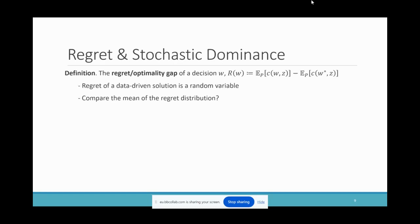To evaluate the performance of a solution, we use the following criteria. The regret or optimality gap of a decision W is the difference between the ground truth expected cost of W and W-star. The lower the regret, the better the decision. Because data-driven solutions depend on the data, their regrets are also random. We need a way to compare two regret distributions — one way is to compare only the mean, which is adopted in some previous research.